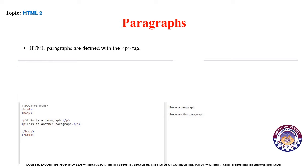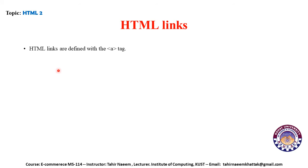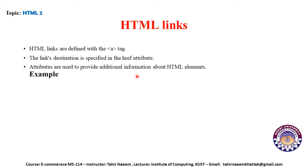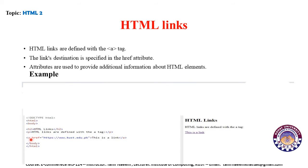HTML links are defined with the anchor tag. The link destination is specified in the href attribute. Attributes are used to provide additional information about an HTML element. In the example, I have used 'a href' with the address HTTPS. This is the link that will be displayed, and when I click on it, it will automatically redirect to www.cus.edu.pk.